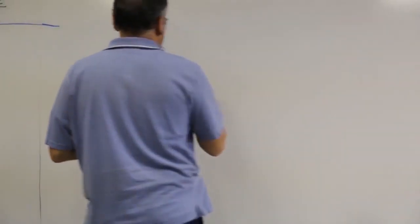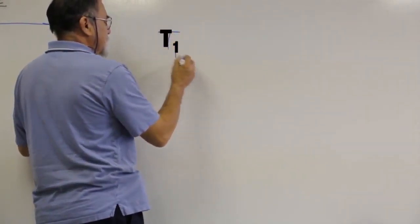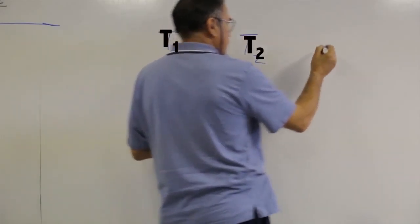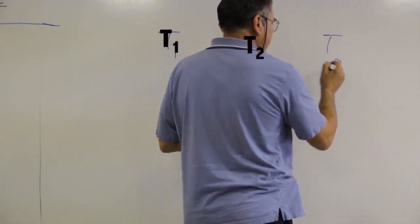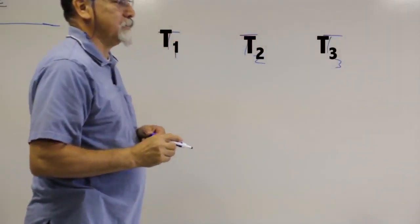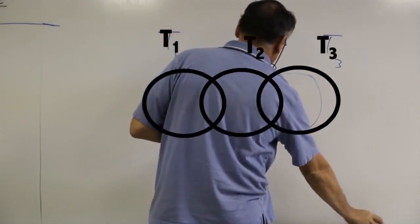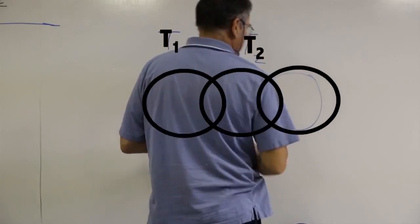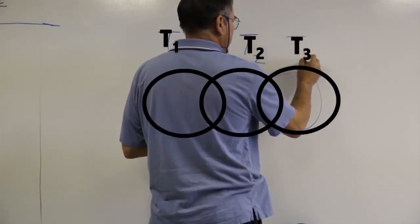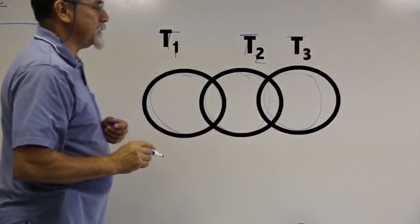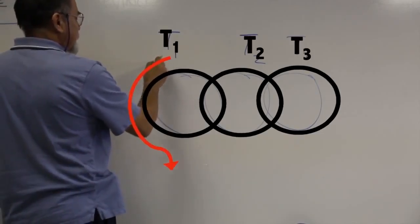We'll begin with the idea of Table 1, Table 2, and Table 3. The way this works is there are common ideas, common items between these tables. So we'll have Table 1, we'll have Table 2, and we'll have Table 3.